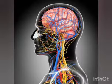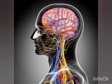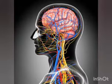Sensory nerves carry messages from different parts of the body to the brain or spinal cord. Motor nerves carry messages from the brain or spinal cord to the different parts of the body. Mixed nerves carry messages both ways — from the brain or spinal cord to the body and from the body back to the brain or spinal cord.